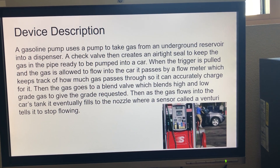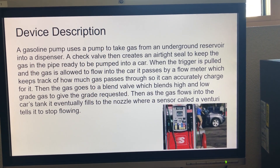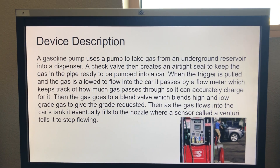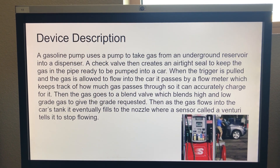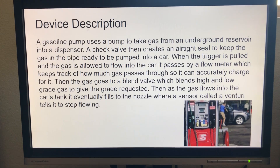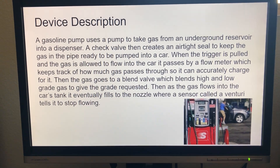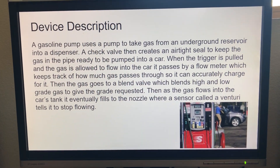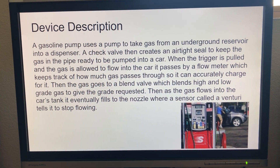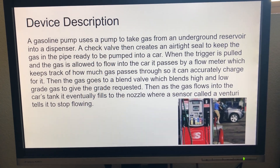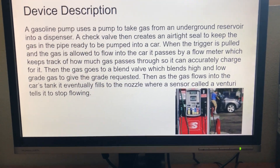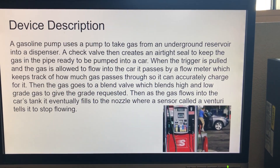A gasoline pump uses a pump to take gas from an underground reservoir into a dispenser. A check valve then creates an airtight seal to keep the gas in the pipe ready to be pumped into a car. When the trigger is pulled and the gas is allowed to flow into the car, it passes by a flow meter, which keeps track of how much gas passes through so it can accurately charge for it. Then the gas goes to a blend valve, which blends high and low-grade gas to give the grade requested when you paid for the gas.